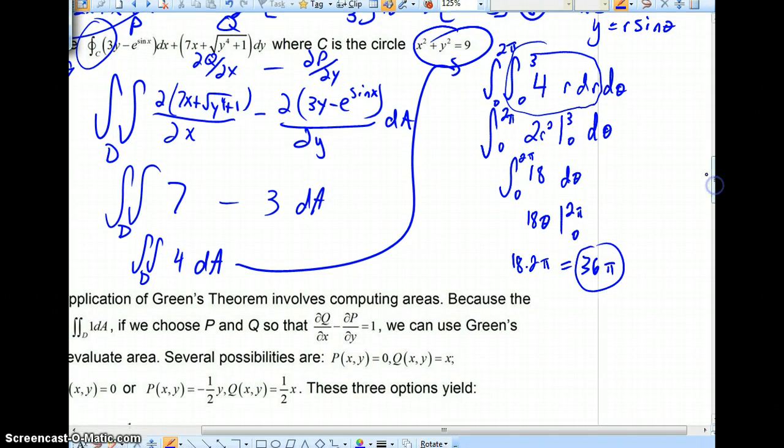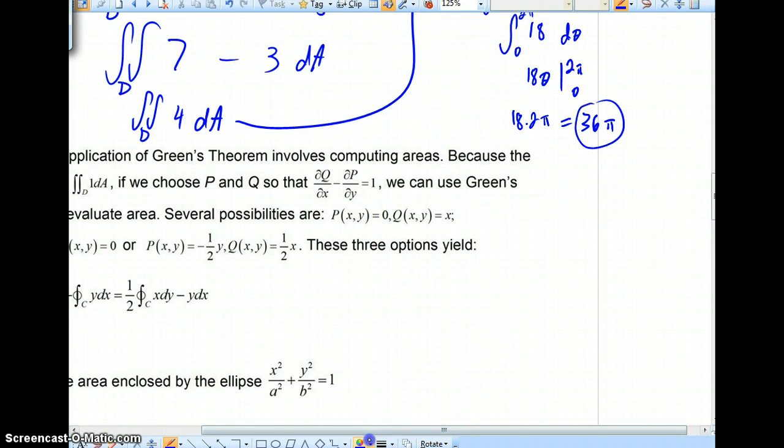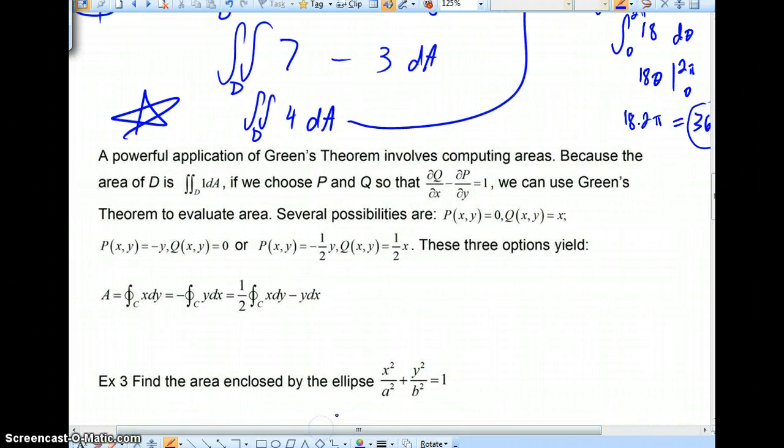Another neat application that Green's theorem will give us is computing area. And if you remember back from last chapter, if our integrand was a 1, we found that if you evaluate the double integral over 1 DA, you would arrive at the area of that region D. So we could choose partial derivative of Q with respect to X minus partial derivative of P with respect to Y to equal 1. And that's what the integrand is according to Green's theorem.